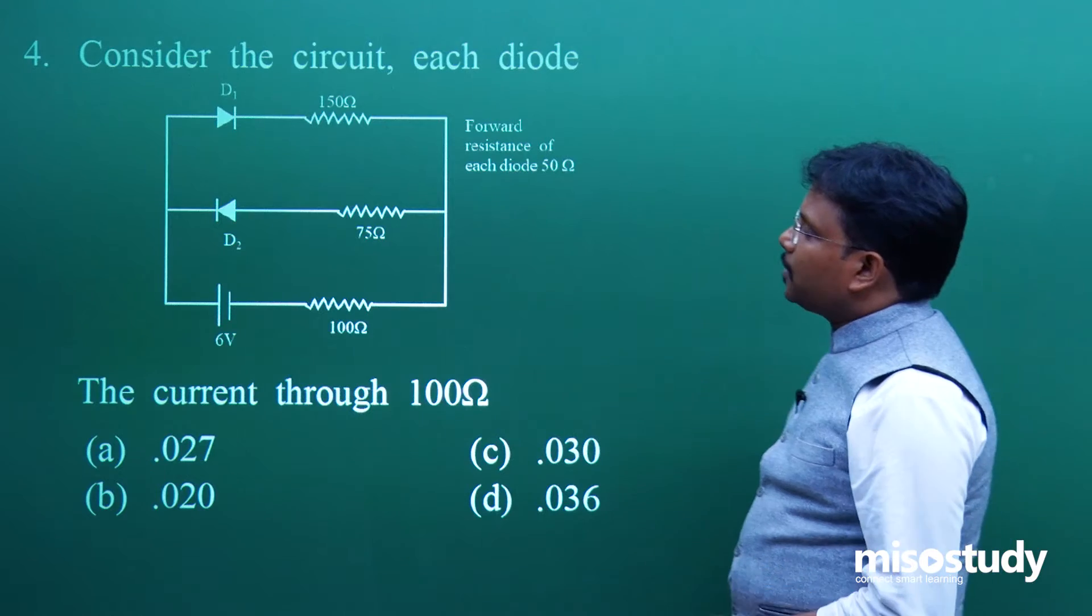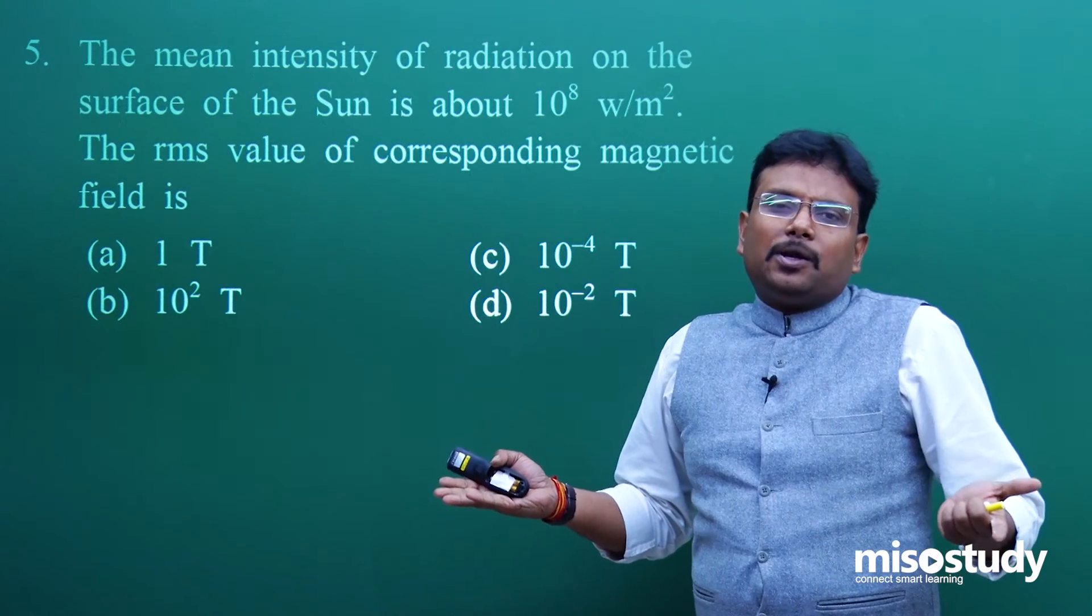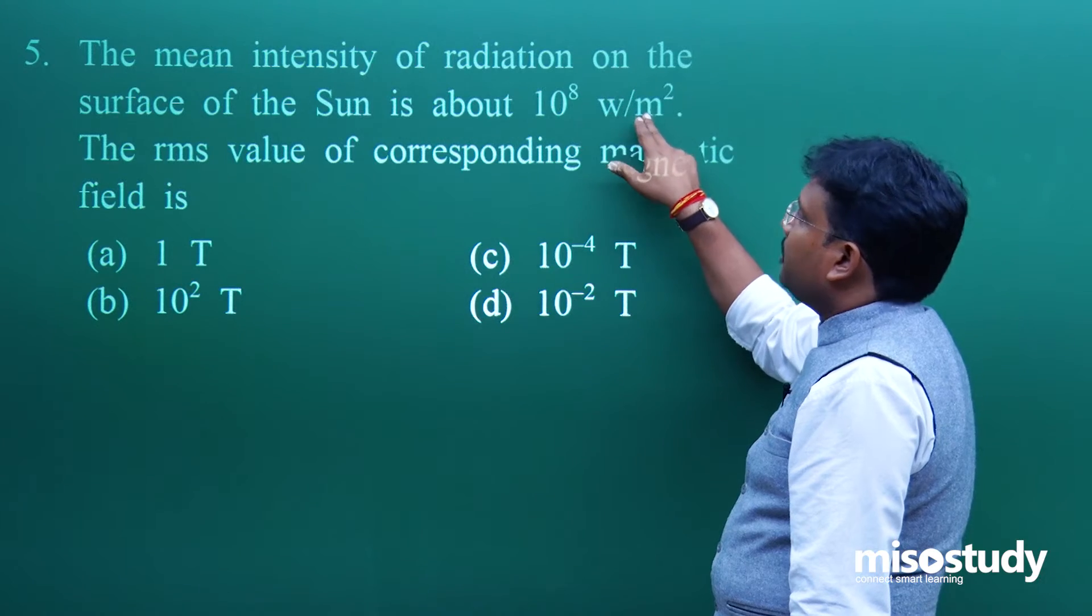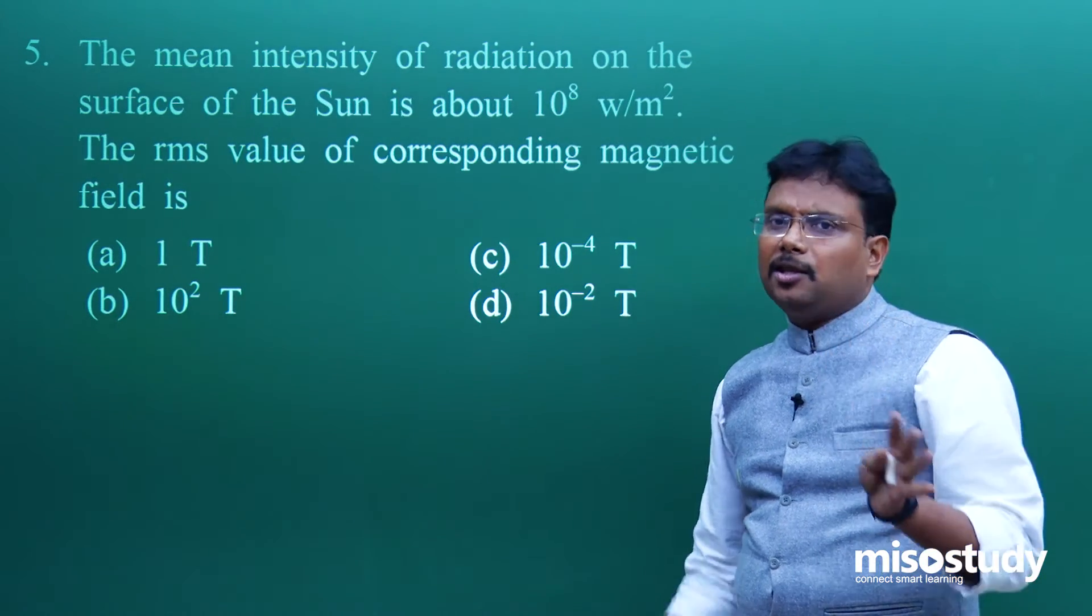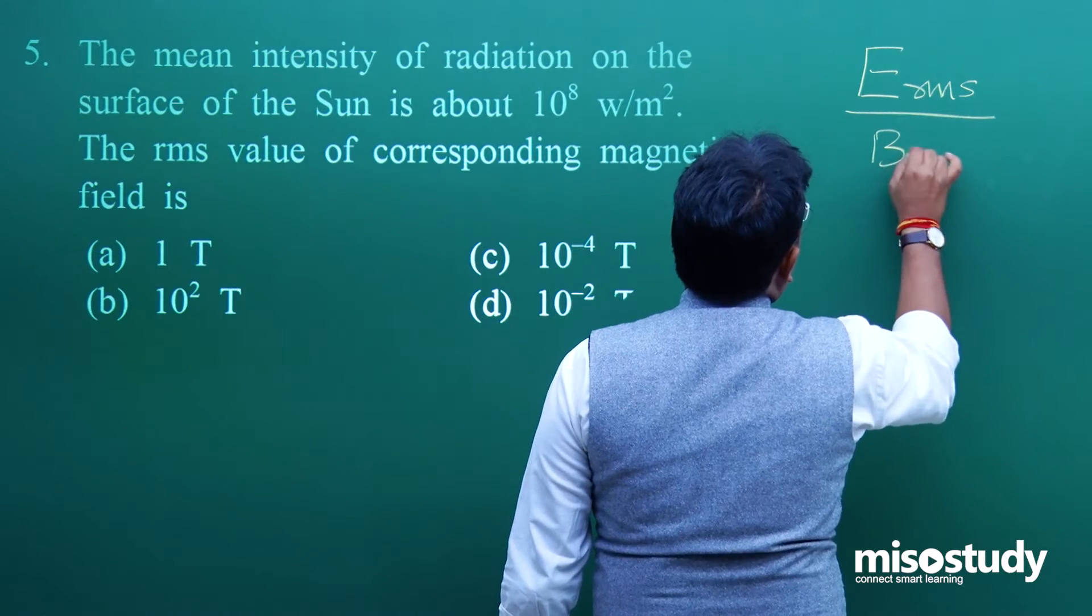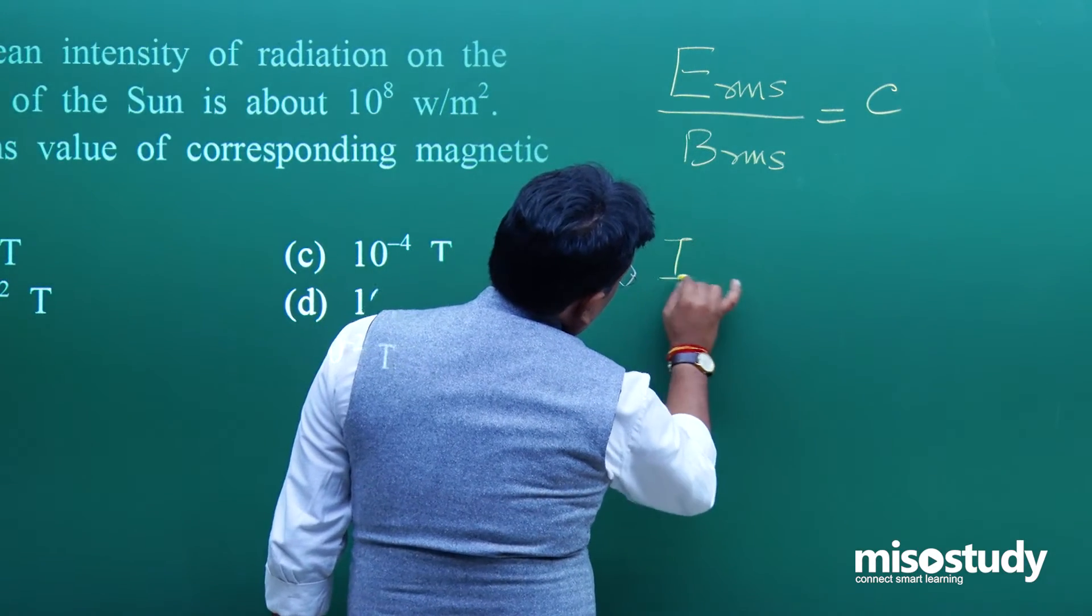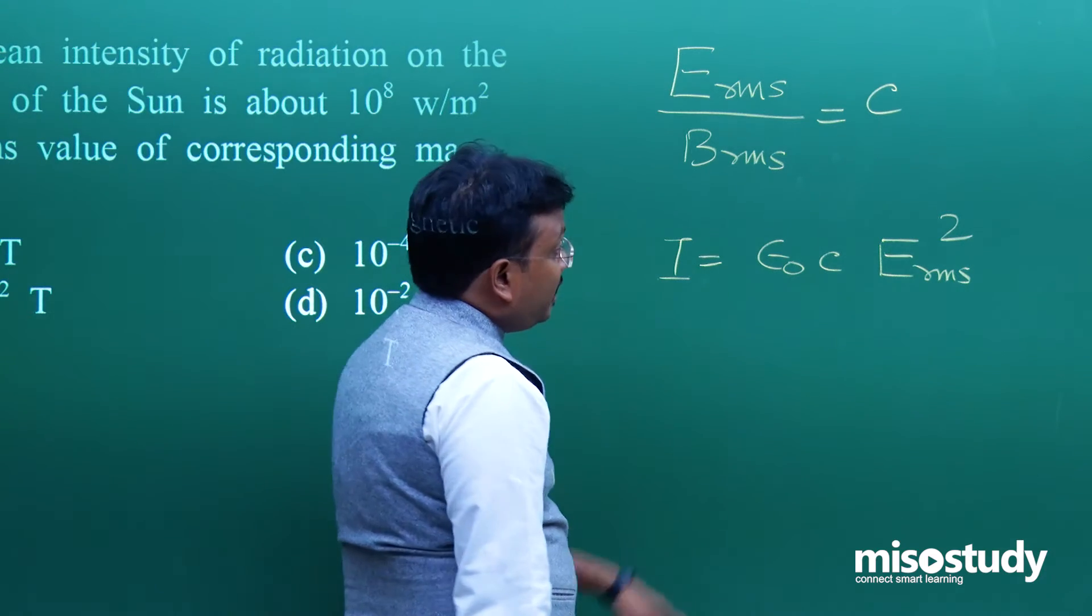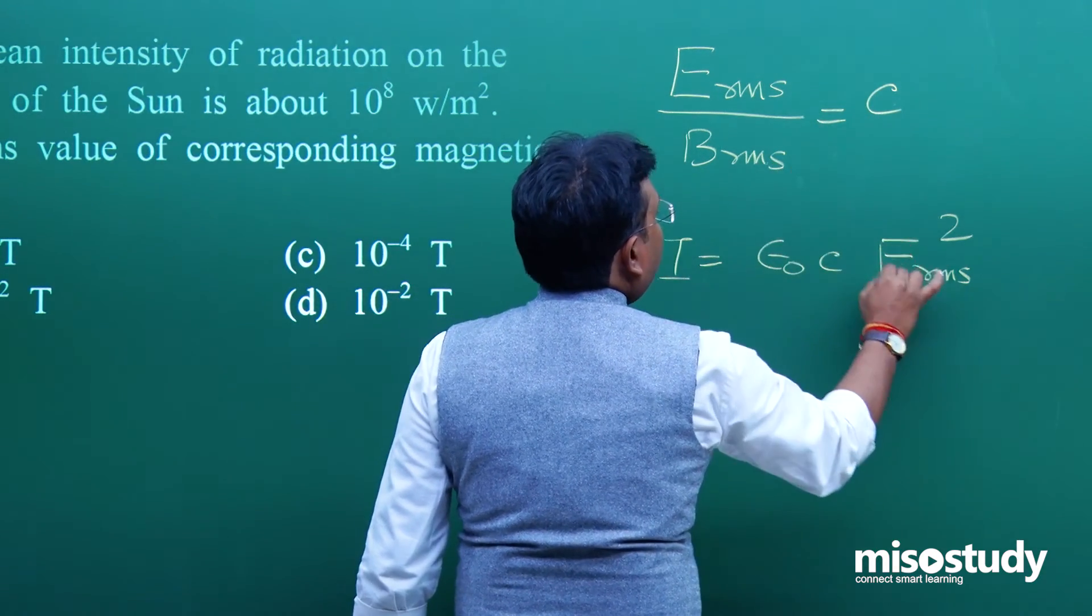A very simple question from electromagnetic wave chapter or modern physics. The mean intensity of radiation on the surface of the sun is about 10^8 watt per meter square. The RMS value of corresponding magnetic field - there are 3-4 formulas in this chapter and the question is only based on those. One formula is E_RMS upon B_RMS equals C. Another relation is I equals epsilon_0 C E_RMS squared. From here you can replace E_RMS as C times B_RMS whole squared.